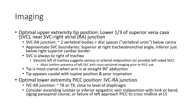Optimal upper extremity PICC position is at the IVC-RA junction, at approximately T8 to T9 vertebral level. When there is malposition — with kink or bend, zigzag, parasernal course, or posterior failure of the line — the catheter should be repositioned.